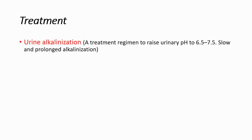For treatment, we can use urine alkalinization, which is a treatment regimen to raise urinary pH to 6.5–7.5. We aim for slow and prolonged alkalinization.